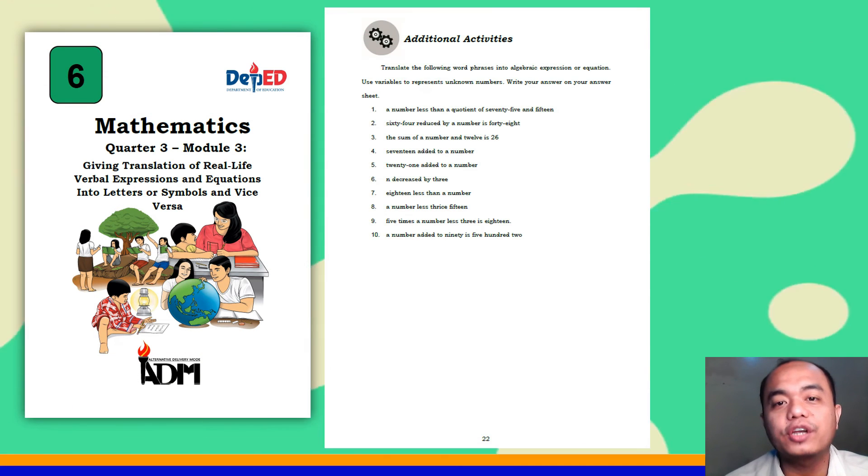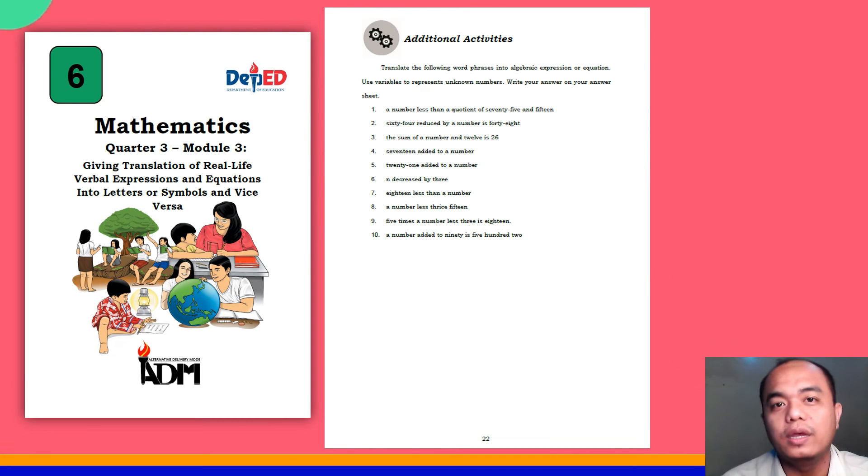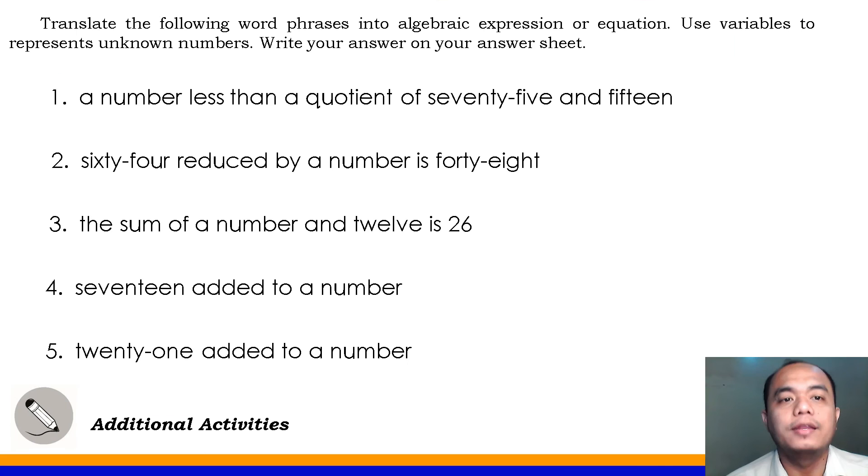This time, let us answer your additional activities in your lesson 2, still in your module 3. Now, direction: translate the following word phrases into algebraic expression or equation. We will use variables to represent the unknown number. Number 1, a number less than a quotient of 75 and 15. Very good, that's 75 divided by 15 minus N. The variable we used for number 1 here is letter N. Again, you can use other letters in the alphabet to represent our variable in number 1.